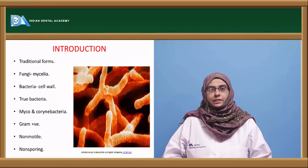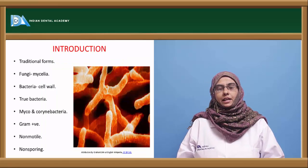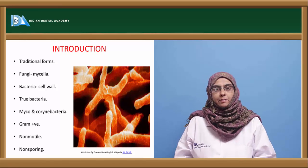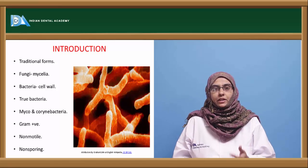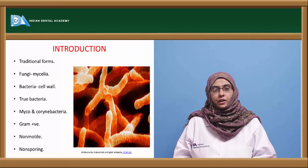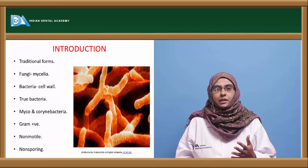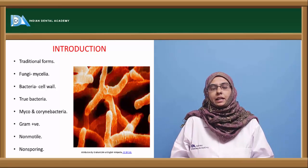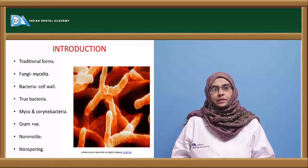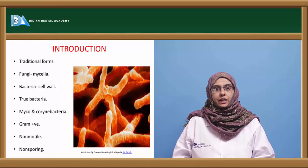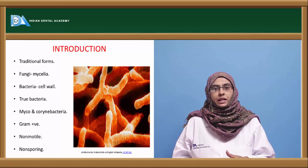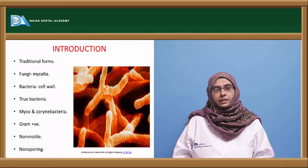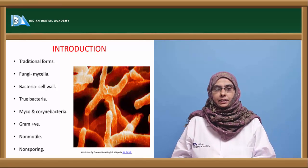Actinomycetes are organisms that have structural resemblance with both fungus and bacteria. That's why they are called as true bacteria. The organisms involved in actinomycosis of cattle and humans show transitional forms between the fungus and the bacteria.